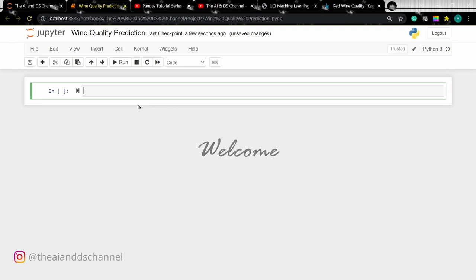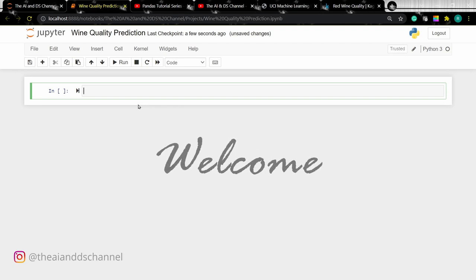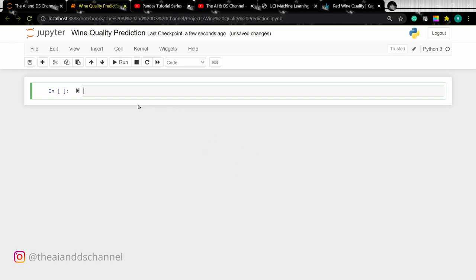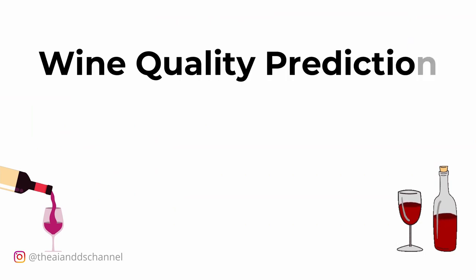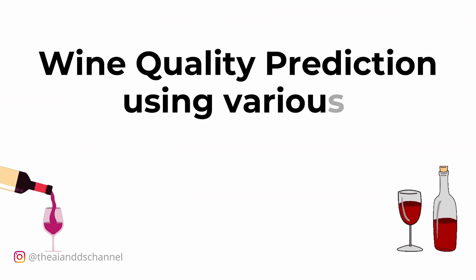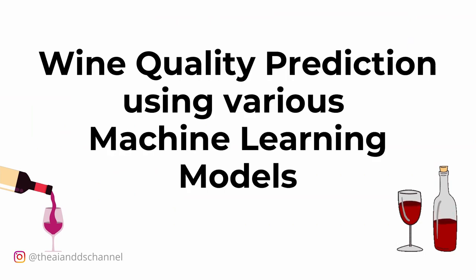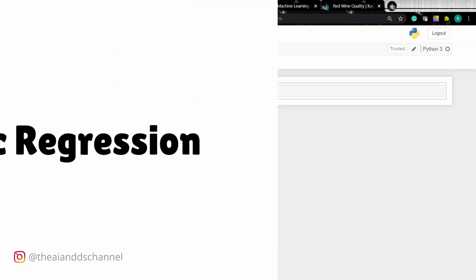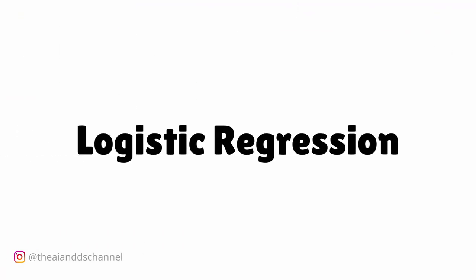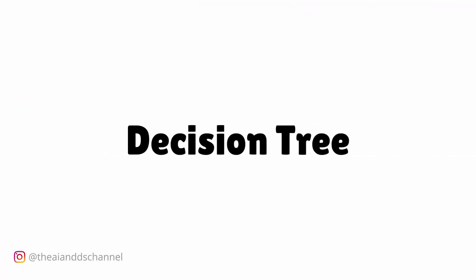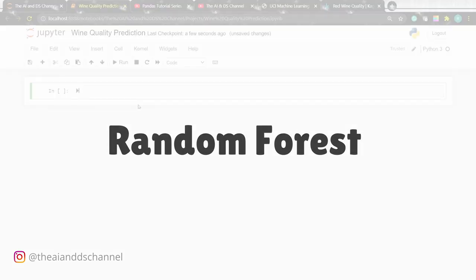Welcome back to another video. In this video we will be looking at how to create a machine learning model that can predict the quality of wine from the given data. We will be using different machine learning algorithms such as logistic regression, decision tree, and random forests to create a machine learning model and see which model gives the best result.